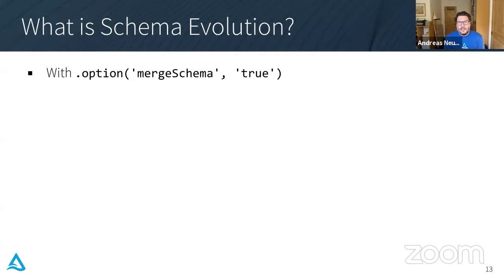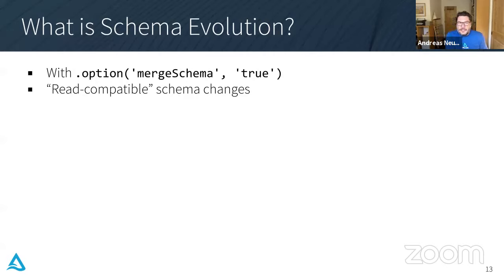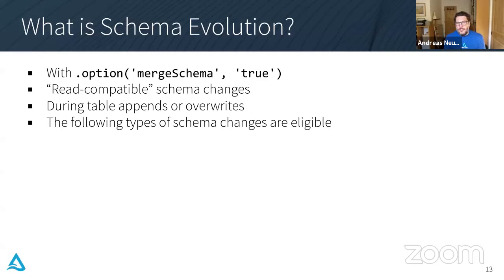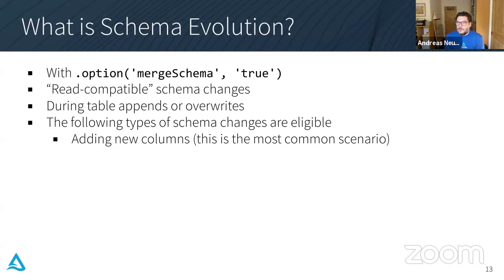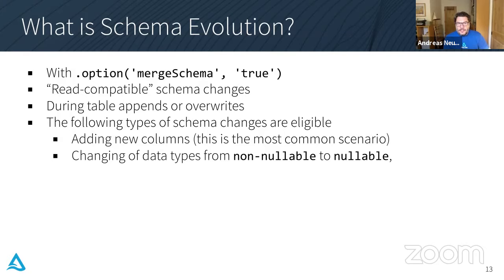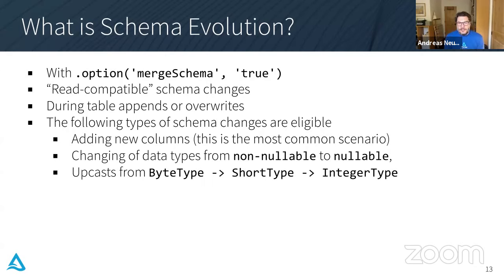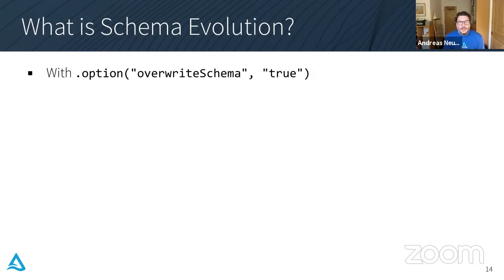With the mergeSchema option set to true, we can make any schema changes that are read-compatible — meaning existing data in the table can still be read according to the new schema. When we append or overwrite, the following changes are available: we can add new columns (old data for those columns will simply be null), we can change a column from non-nullable to nullable (a relaxation of the schema), and we can do upcasts — going from a smaller type to a bigger type, for example byte to short or short to integer.